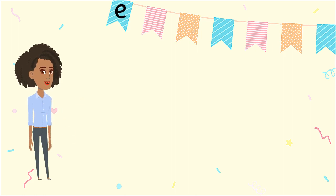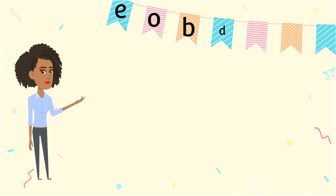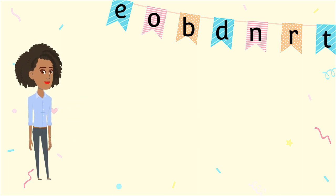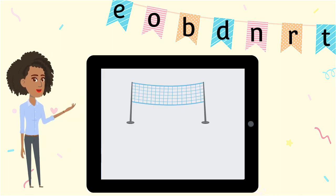Let's add some new sounds. E says e. O says a. B says b. D says d. N says n. R says r. T says t. Our next word is net.